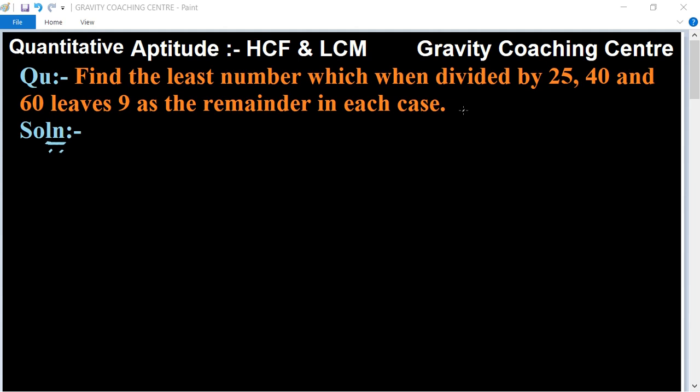So in this question, we need to find the least number which when divided by these three numbers leaves remainder 9 in each case after division.